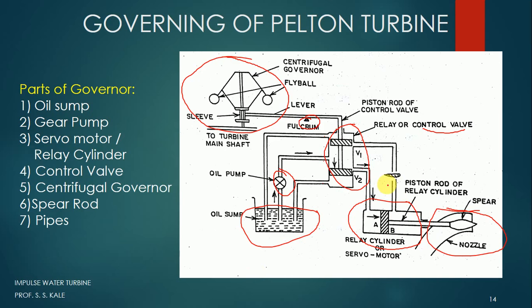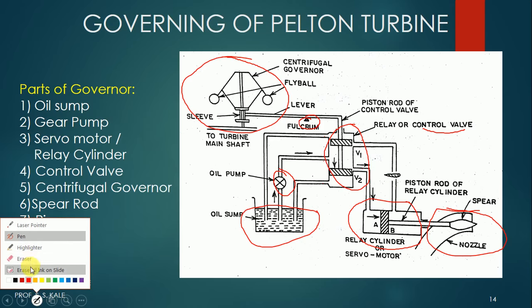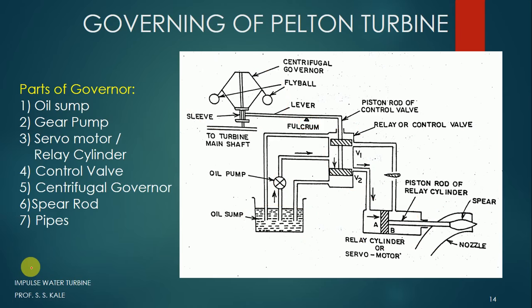The aim of all these components together is to maintain the speed of the turbine to be constant. We need to understand in detail how the control valve is connected to the governor. The control valve is connected to the governor by using this lever, and the lever is supported by the fulcrum.